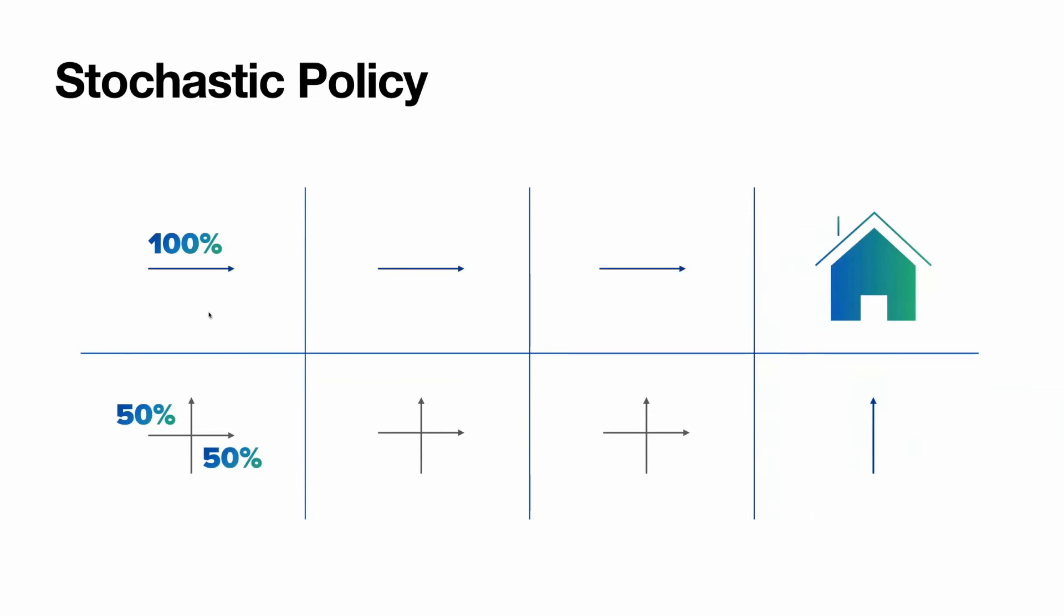Either we go up, we will do the same number of steps. Or if we go right in these three cells, we will achieve our home in the same number of steps. The reward will be equal.